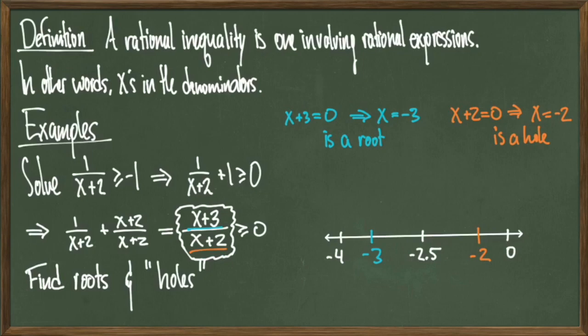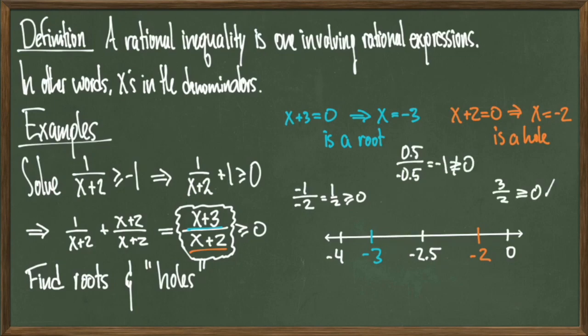All these test point values will be plugged into the expression x plus 3 over x plus 2. Plugging in negative 4 gives me an answer of 1 half, which is greater than 0. If I plug in negative 2.5, I get negative 1, which is less than or equal to 0, so that's not what I want. And if I plug in 0, I get 3 over 2, which is greater than or equal to 0, which is what I want.